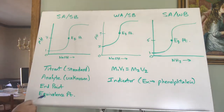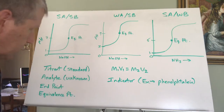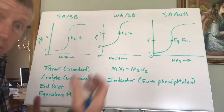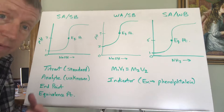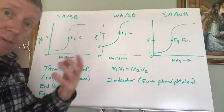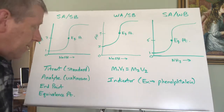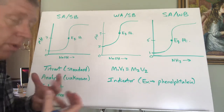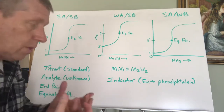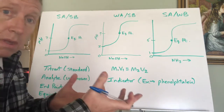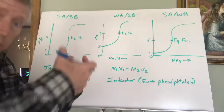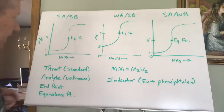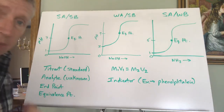To summarize the equivalence point: it's when you have equal volumes — equal moles — of your acid and base introduced together. That means equal moles of H⁺ and OH⁻ have been added, though not necessarily equal amounts available, depending on whether the acid or base is strong or weak. The endpoint is when you stop your titration.